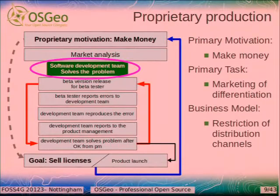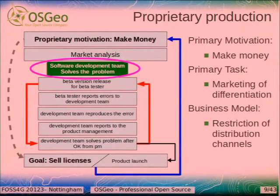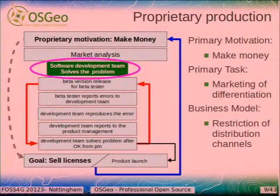The business model is to restrict the distribution channels. In open source we go to the internet and publish the code with no restriction. In the proprietary model, you have a restriction — and this restriction is the goal to sell licenses. You come from the make-money motivation and you want to sell licenses. How do you sell licenses? For example, by restricting features and releasing them in the next version. Maybe there's something wrong with the software and you don't fix it right away because it will be a feature in the next version that you're going to sell.